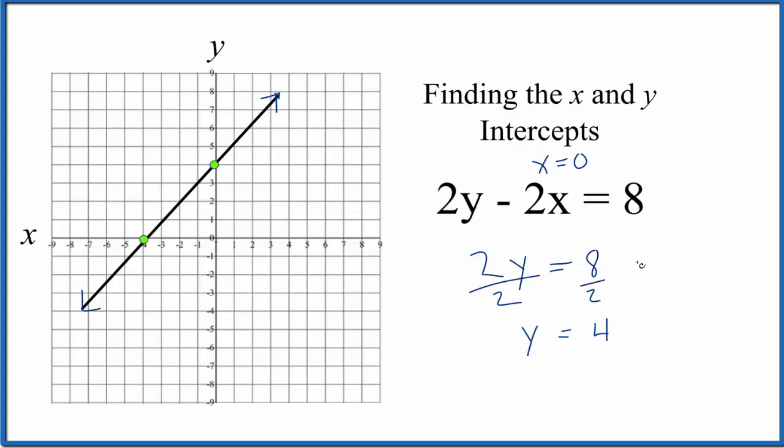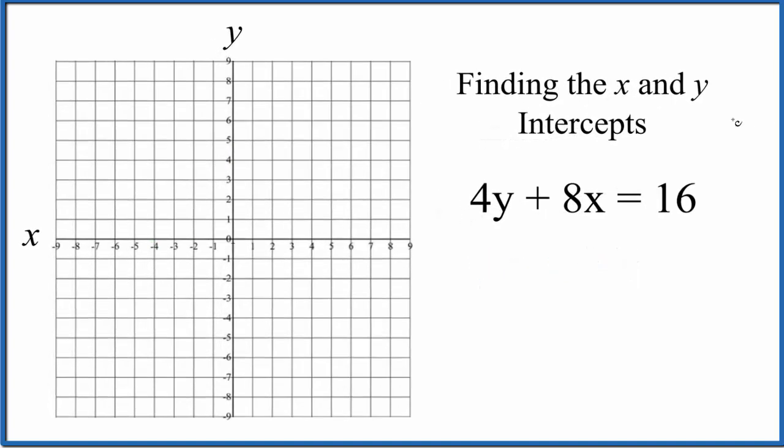You could also create a table like we did earlier to find values for x and y. And if we rearrange this and put it in slope-intercept form, we could use that technique as well. So pause, give this one a try. So y equals 0, we end up with y is 0, x is 2. So that's our first point.